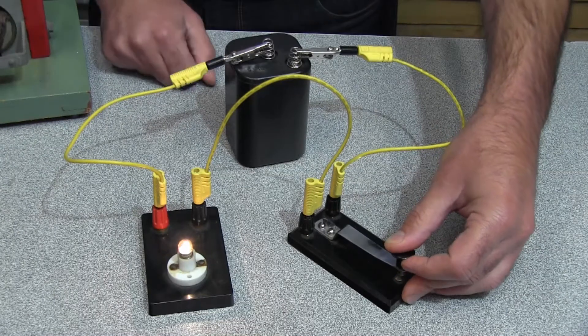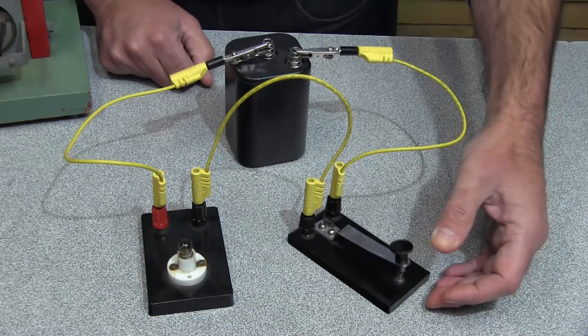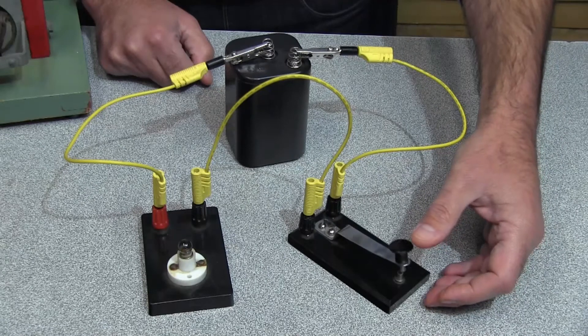back through this wire, and then back to the battery. When the switch is released, the circuit is interrupted and the electric current can't flow anymore.